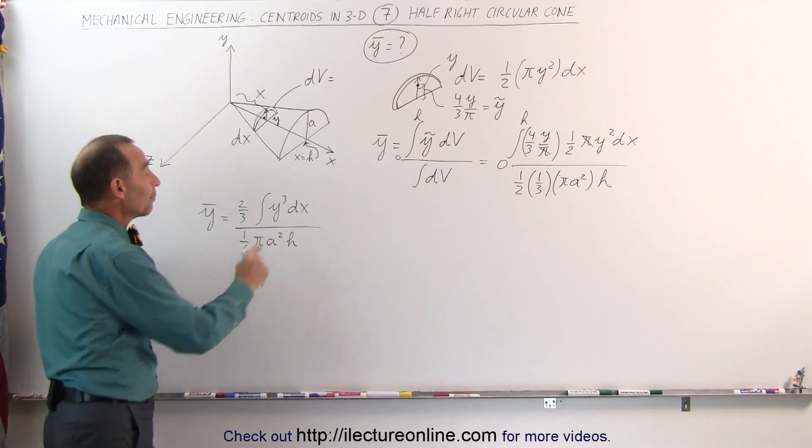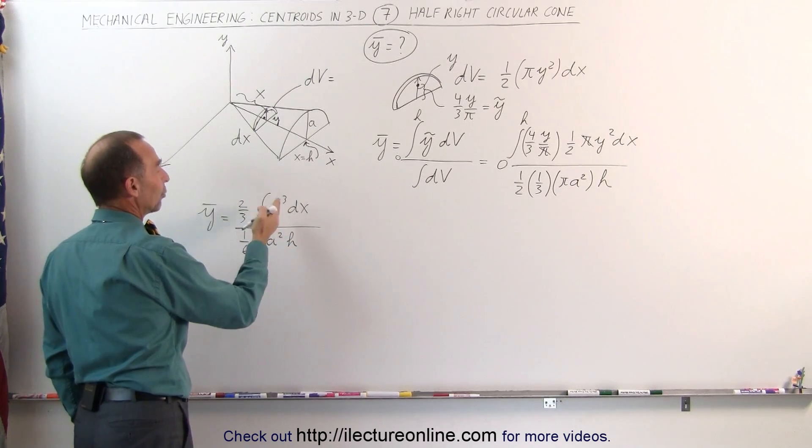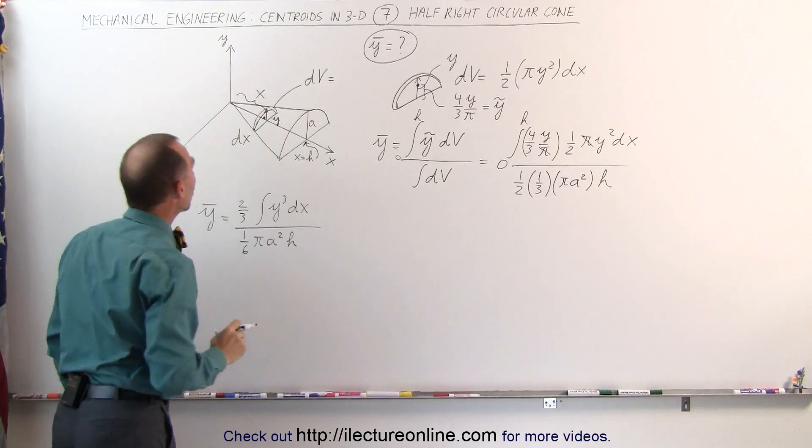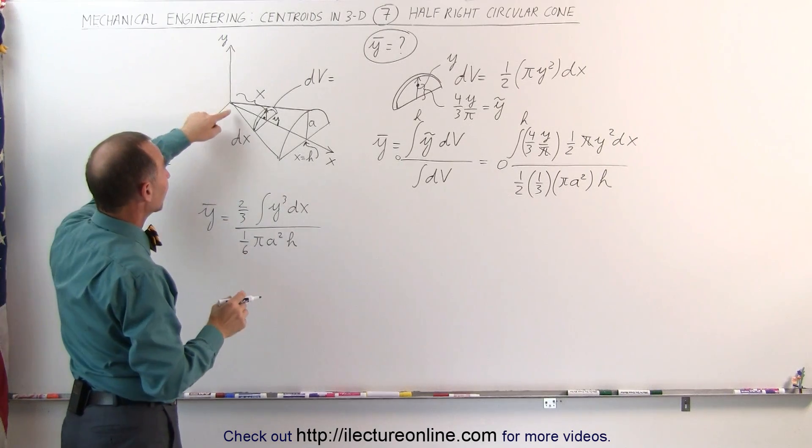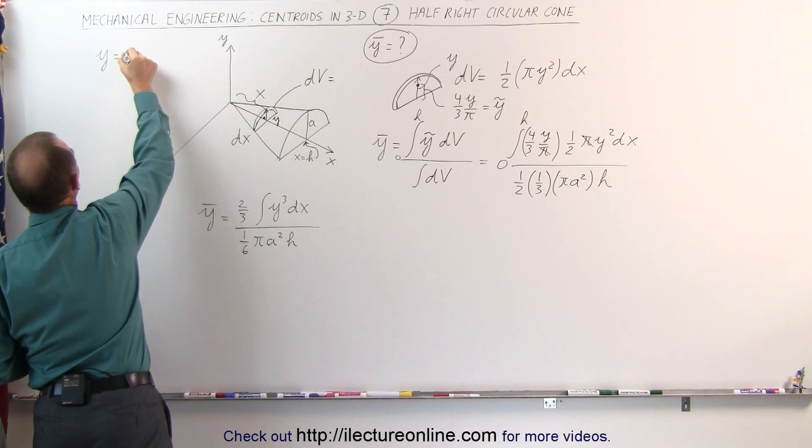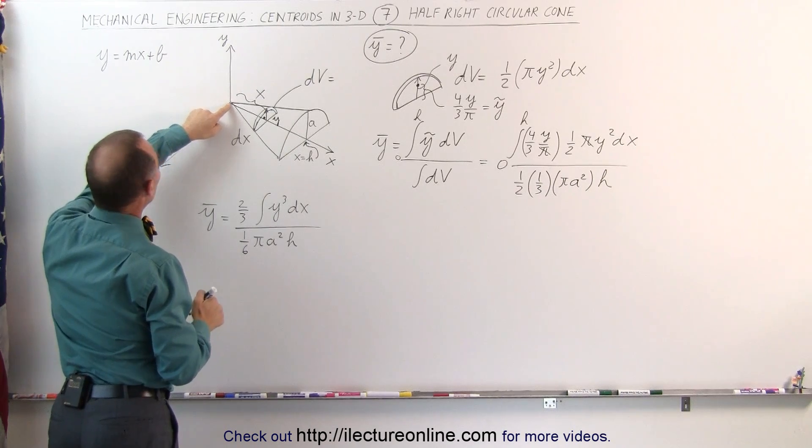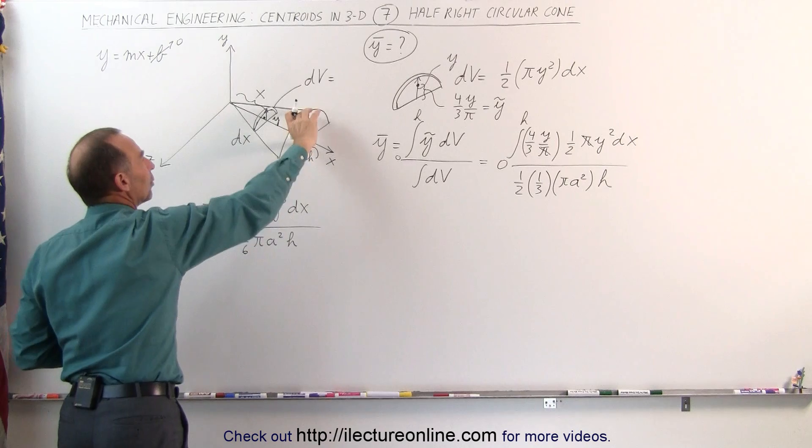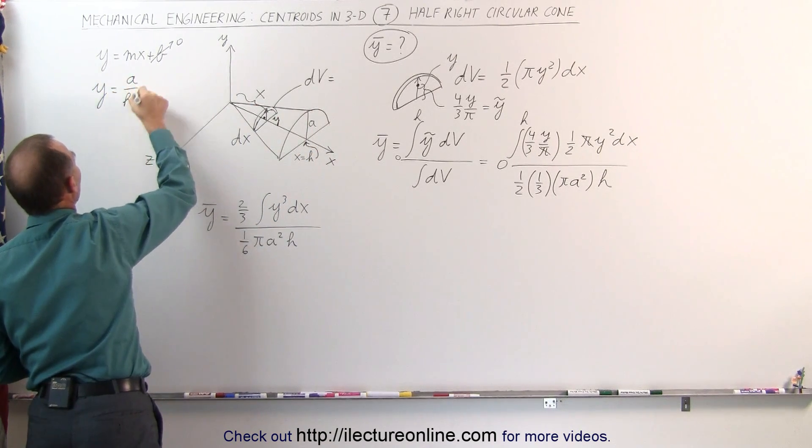Now we still have one problem, we have a y cubed and a dx, that doesn't match so we have to convert, we have to write y in terms of x. Again we take the very top ridge of that half right circular cone and we realize that is a straight line starting from the origin reaching up to height a. So we can think of it as a y equals mx plus b equation. b will be zero because it starts at the origin, so b is equal to zero. And m is the rise over the run that would be a divided by h, so we can write that y is equal to a divided by h times x.